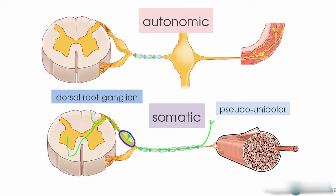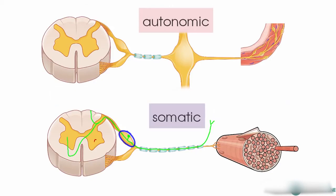Now it's the efferent component that I want to draw your attention to. The motor component of the somatic nervous system originates in the ventral horn of the spinal cord in the grey matter, leaves via the ventral root, and then this single neuron innervates the skeletal muscle and results in contraction. The key here is that there's one single neuron in the efferent component of the somatic nervous system which extends from the central nervous system to the periphery.